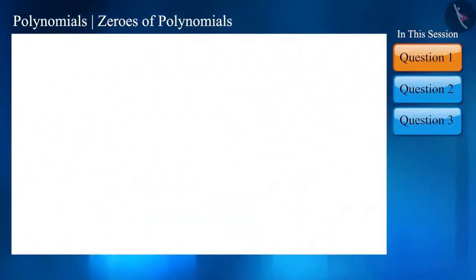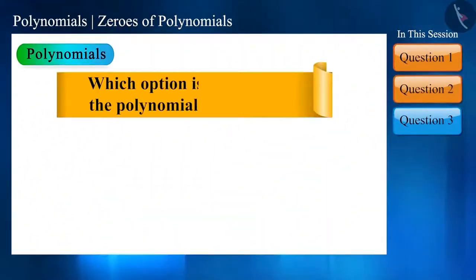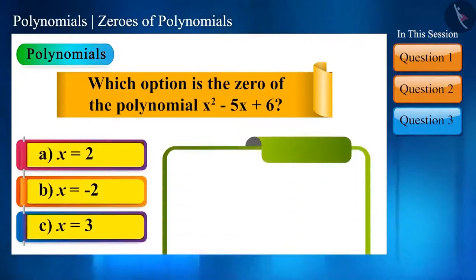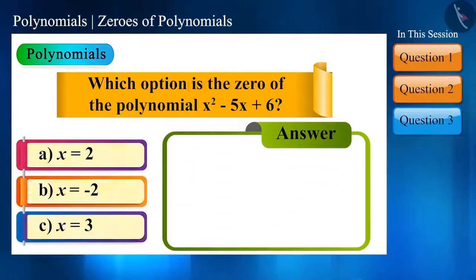Let us now take the next question. From the given options, which one will be the zero of the polynomial x² - 5x + 6? By the way, this is a very easy question. All the values of x need to be put one by one to find for which value of x the polynomial becomes zero.